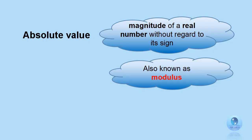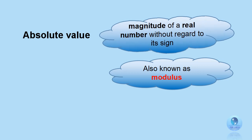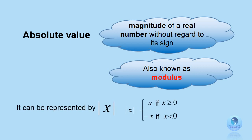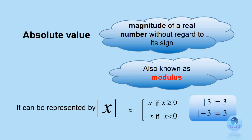What is absolute value? Absolute value is the magnitude of a real number without regard to its sign. It is also called the modulus. In mathematics, it can be represented by the modulus sign. For example, if you take modulus 3, you get the answer 3. If you take modulus negative 3, you also get the answer 3. So in other words, we only take the positive value of the given number in modulus.